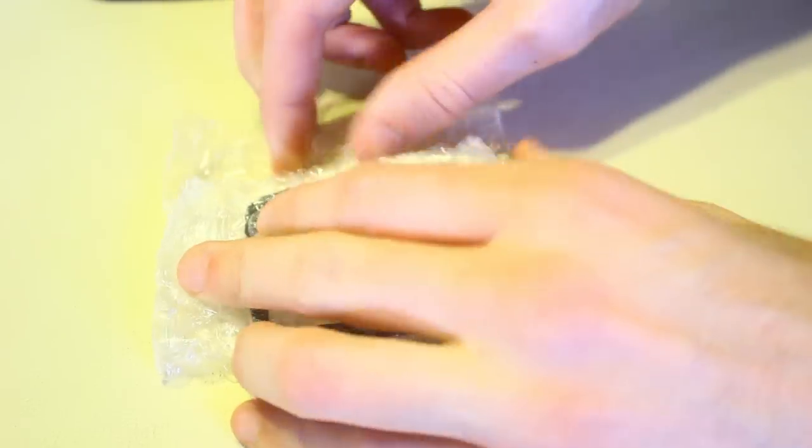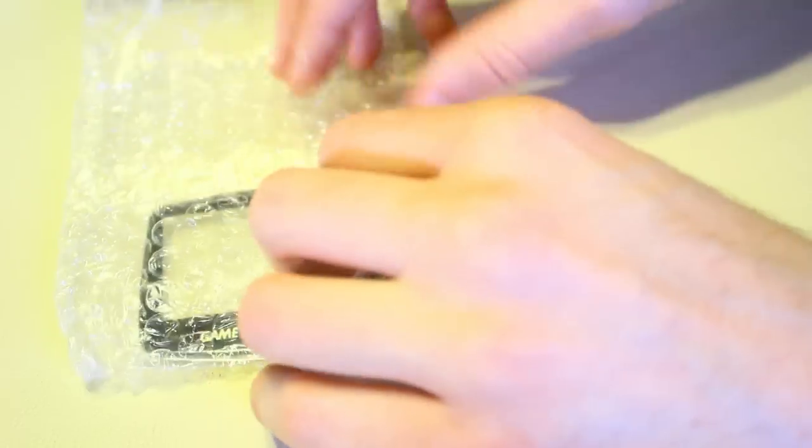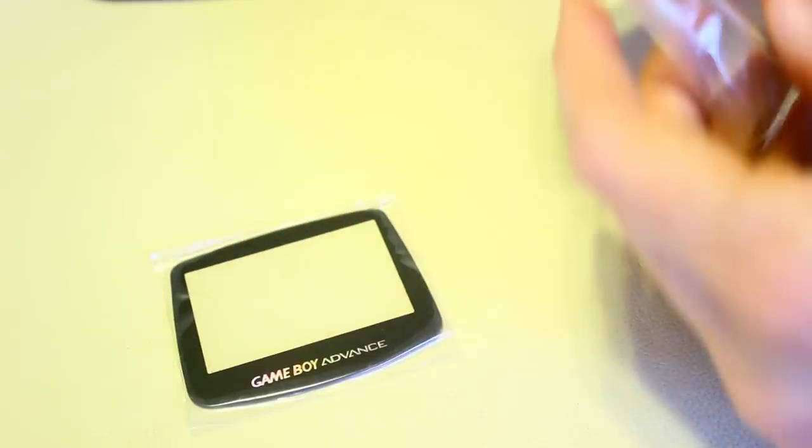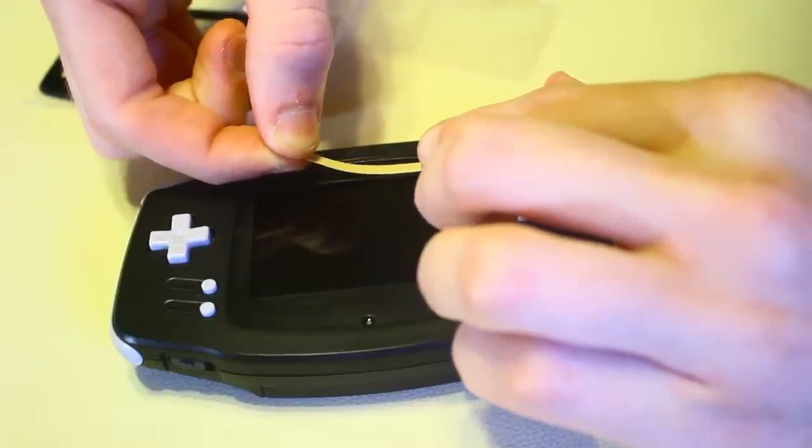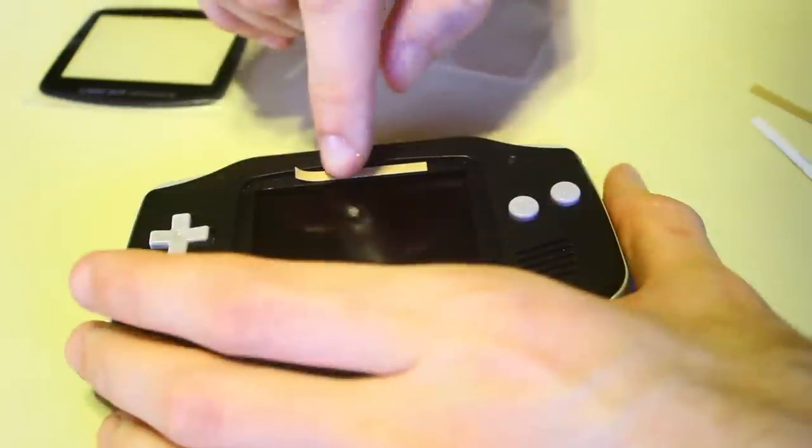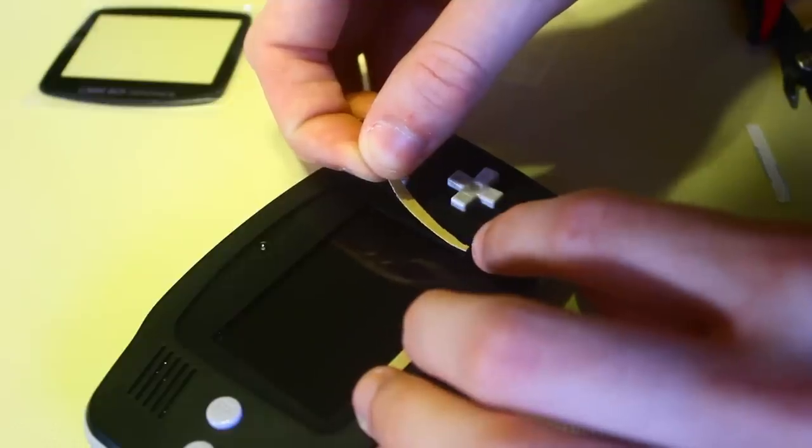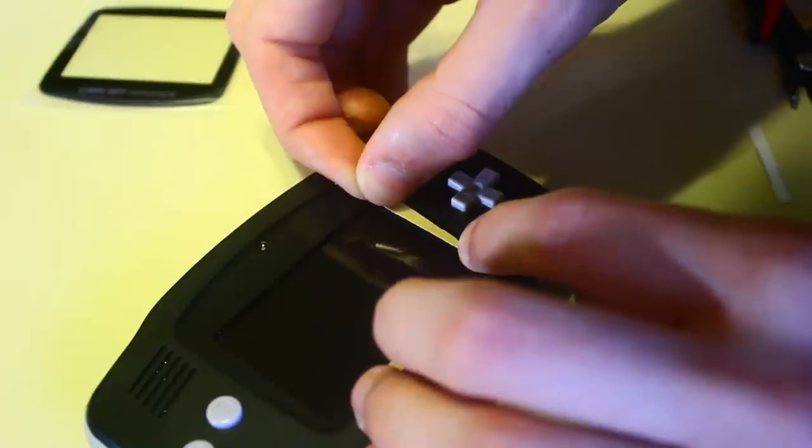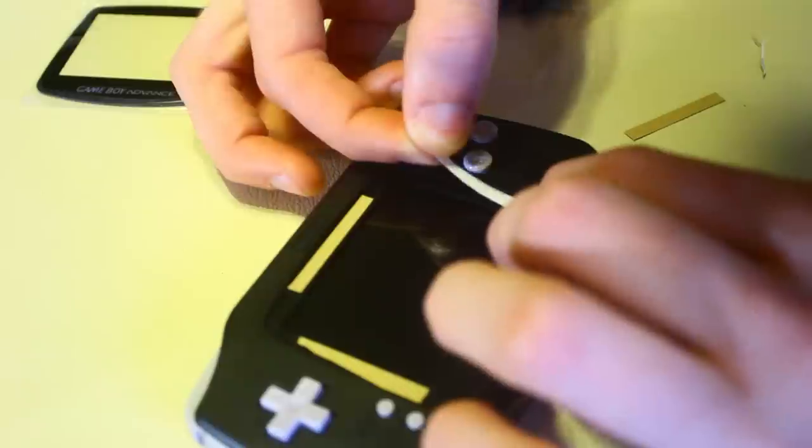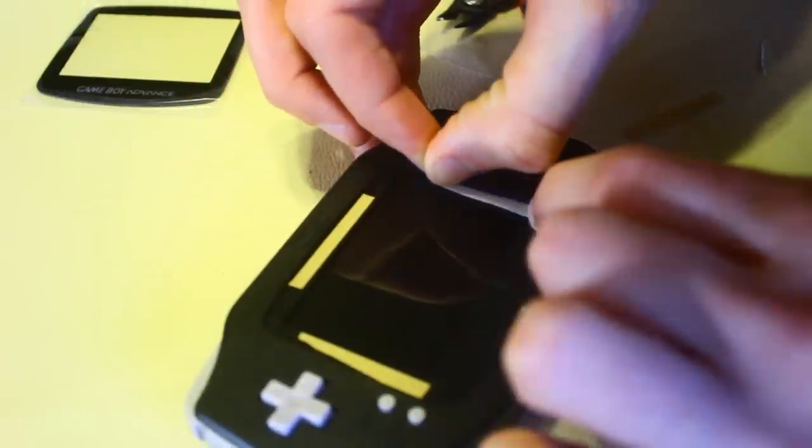If you get the lens from Rose Colored Gaming, it comes with the lens and four adhesive strips. Place the four adhesive strips along the frame surrounding the screen. The left and right adhesive strips we did have to trim down a little bit so that they wouldn't overlap the screen.